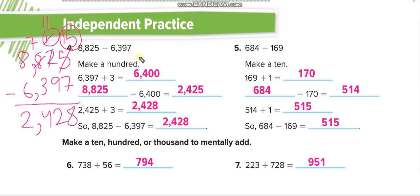Seven minus three is four, and eight minus six is two. So the direct method gives 2428. Or the other way: if you add 3 to 6397, it becomes 6400. Then subtract 6400 from 8825, you get 2425. But because you added 3 before subtracting, you add 3 back to get 2428. Same answer.